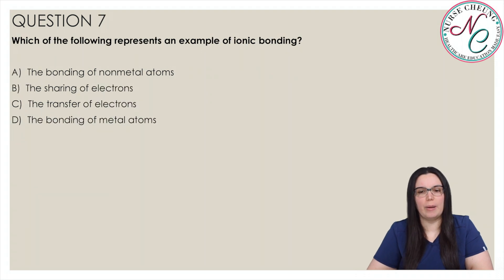Which of the following represents an example of ionic bonding? Is it A the bonding of nonmetal atoms, B the sharing of electrons, C the transfer of electrons, or D the bonding of metal atoms? And the correct answer is C the transfer of electrons. Ionic bonds differ from covalent bonds in that they transfer an electron from one compound to another rather than sharing electrons. They occur between metals and nonmetals in conjunction.